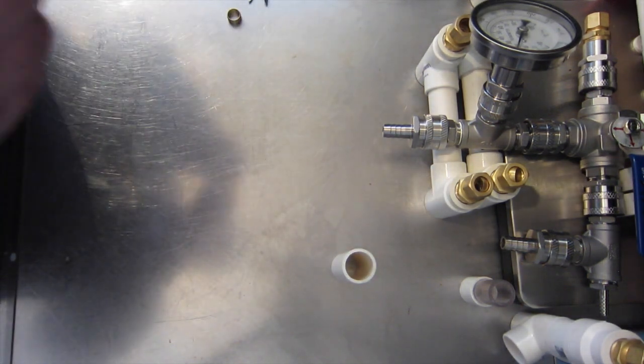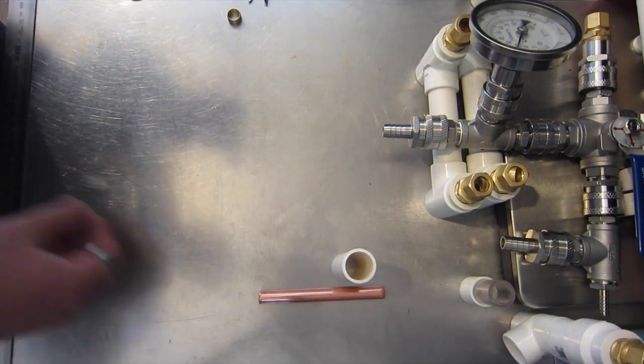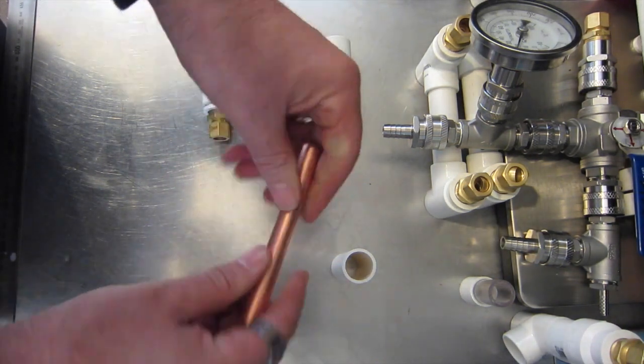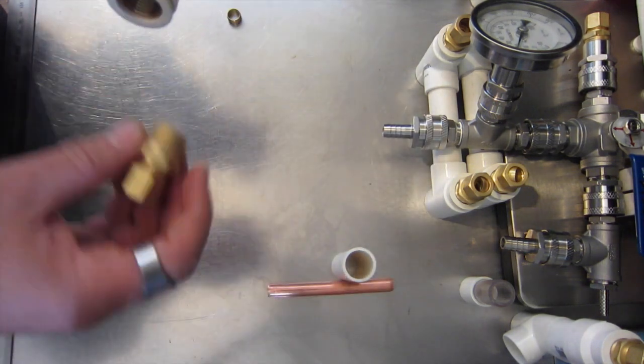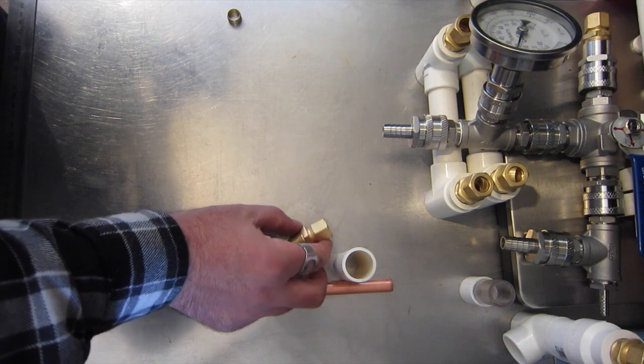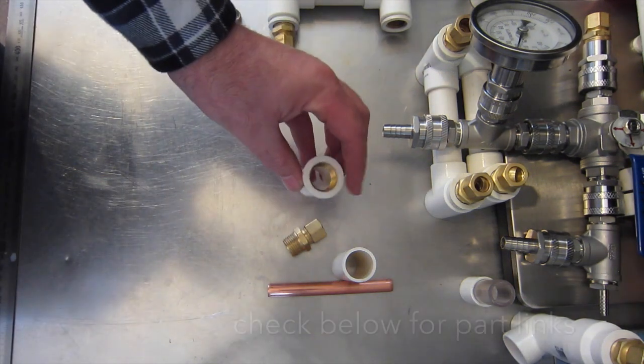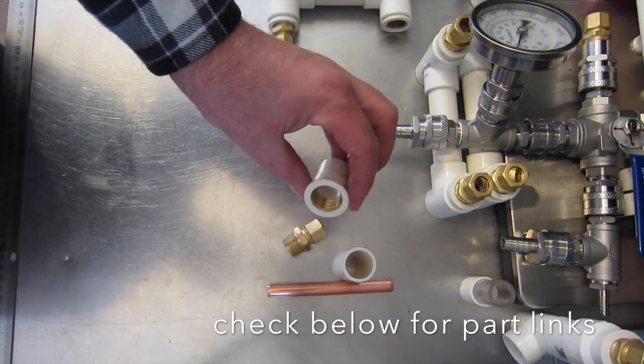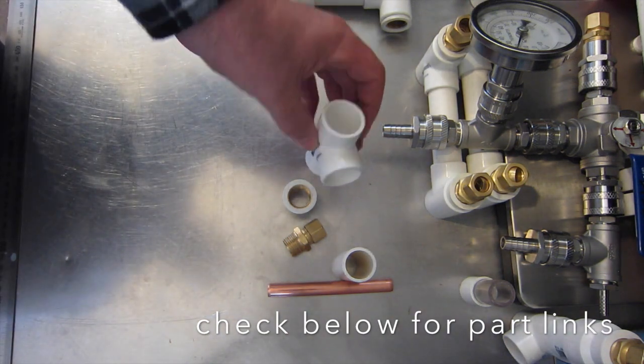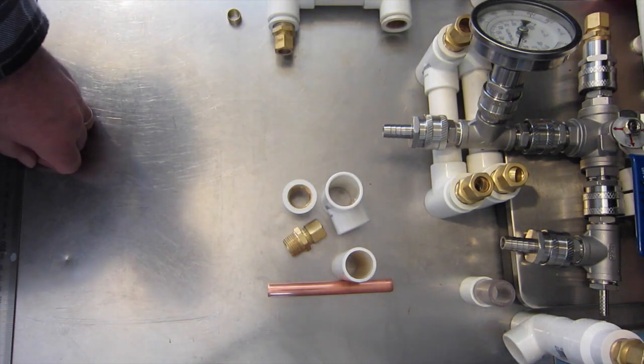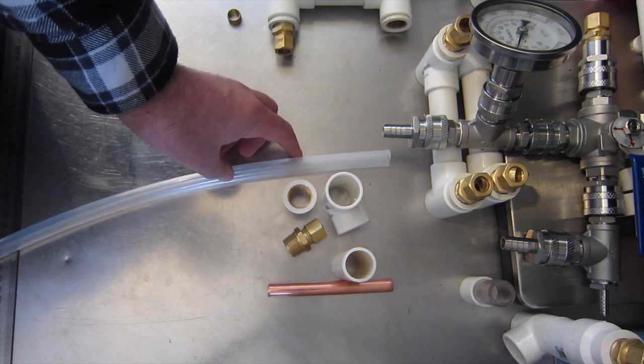We're also using half-inch copper pipe - this is refrigeration pipe, so this is the soft copper that you can easily bend when it's in a long length. Half-inch compression fittings, a 20mm to half-inch tapped pipe connector, and a 20mm T-joint. Some silicon hose. And that's it.